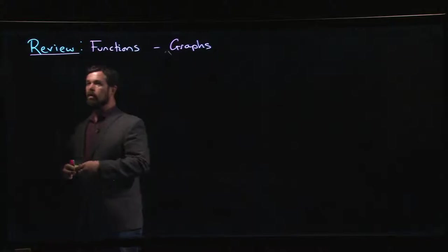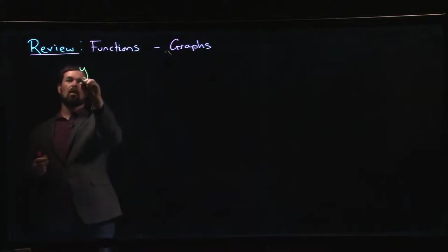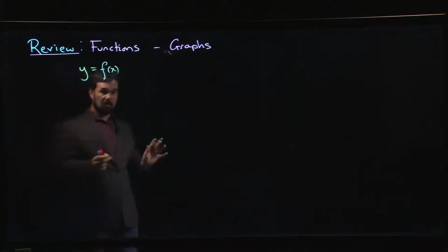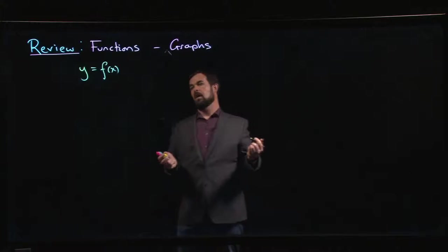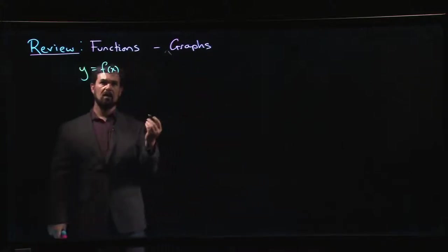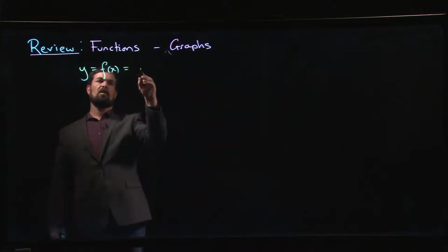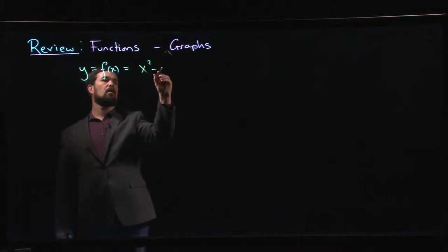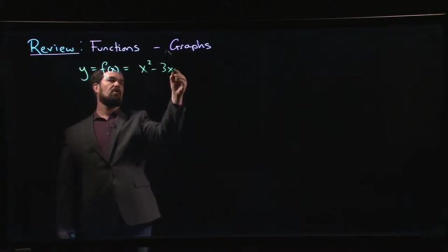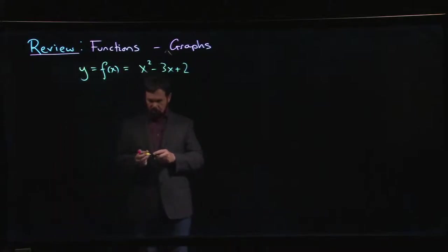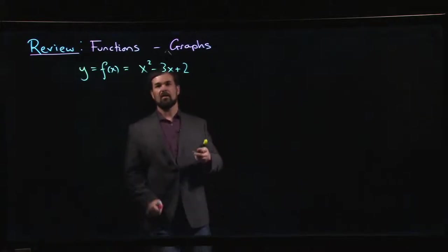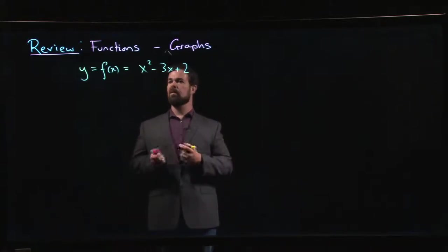Sometimes when we write down something like even something as simple as a quadratic, we write down this sort of expression, y equals f of x. This is the sort of equation that you see which usually signifies we're dealing with graphs. Let's say that function is something like a quadratic: x squared minus 3x plus 2. Just looking at this function, maybe you can't immediately tell me everything there is to know about that function.